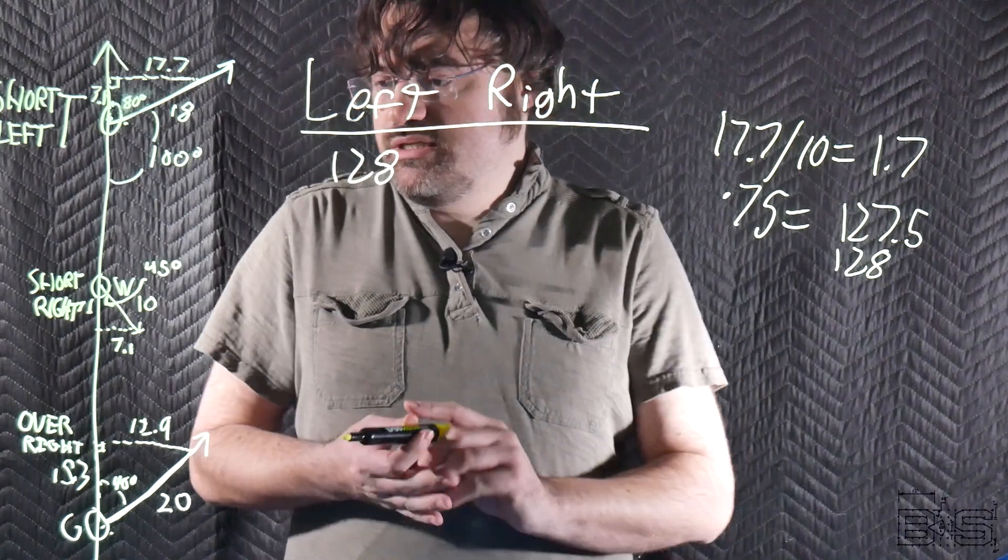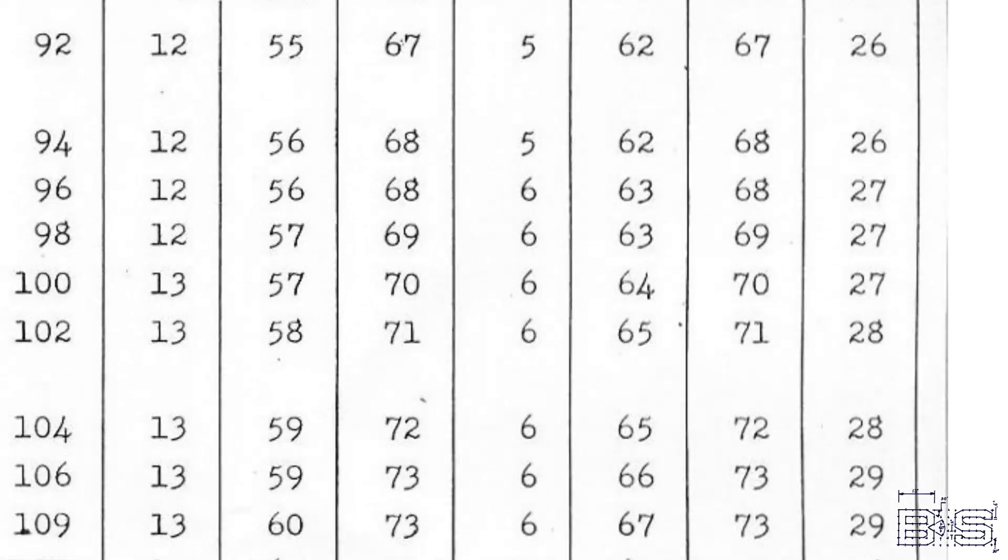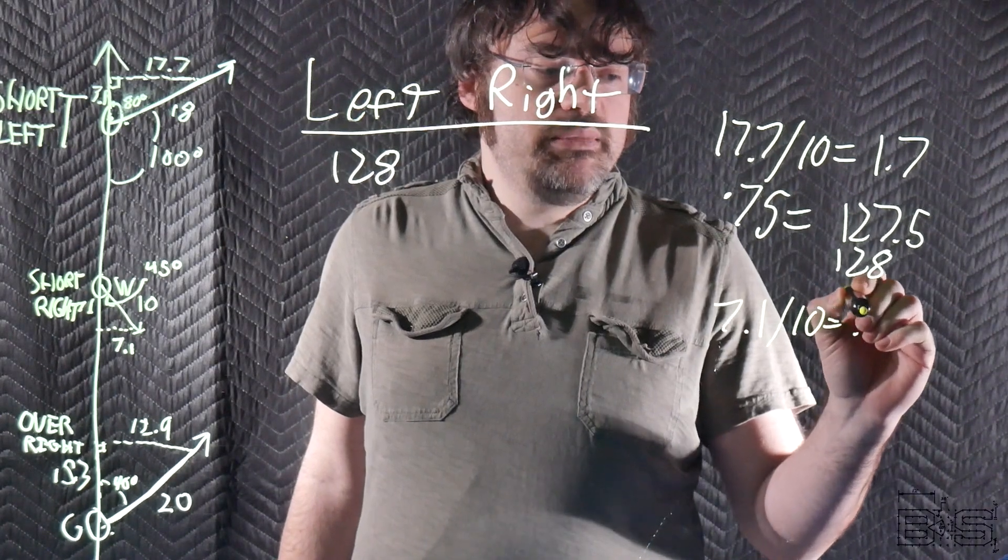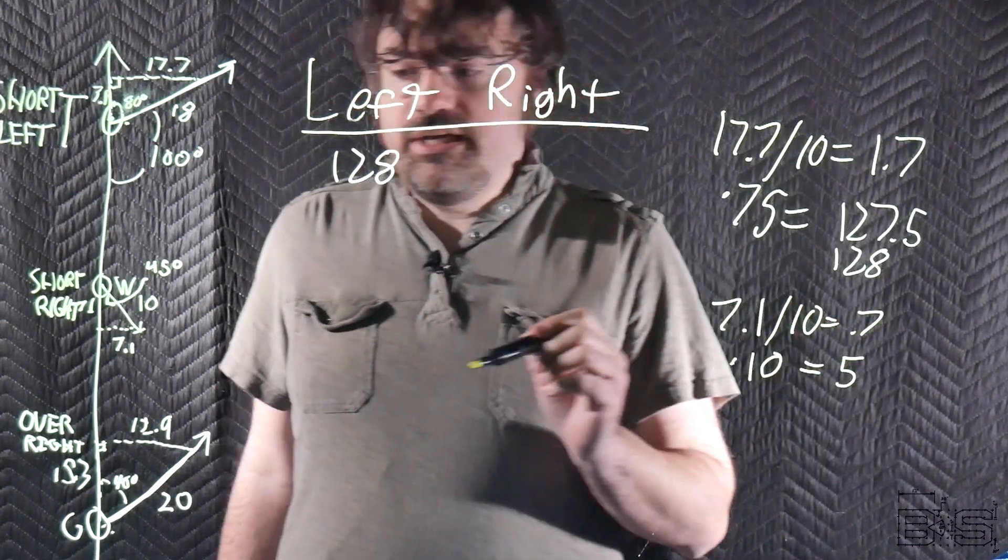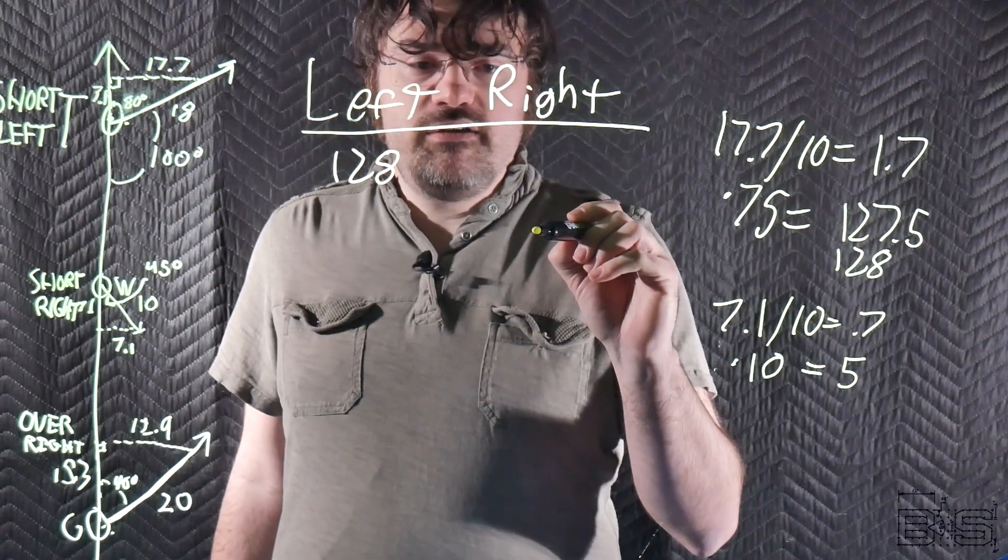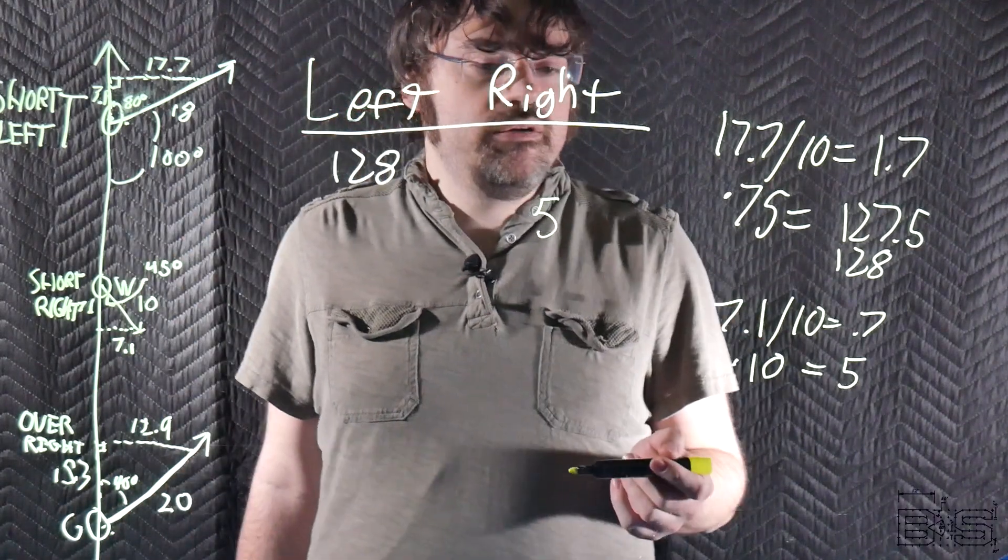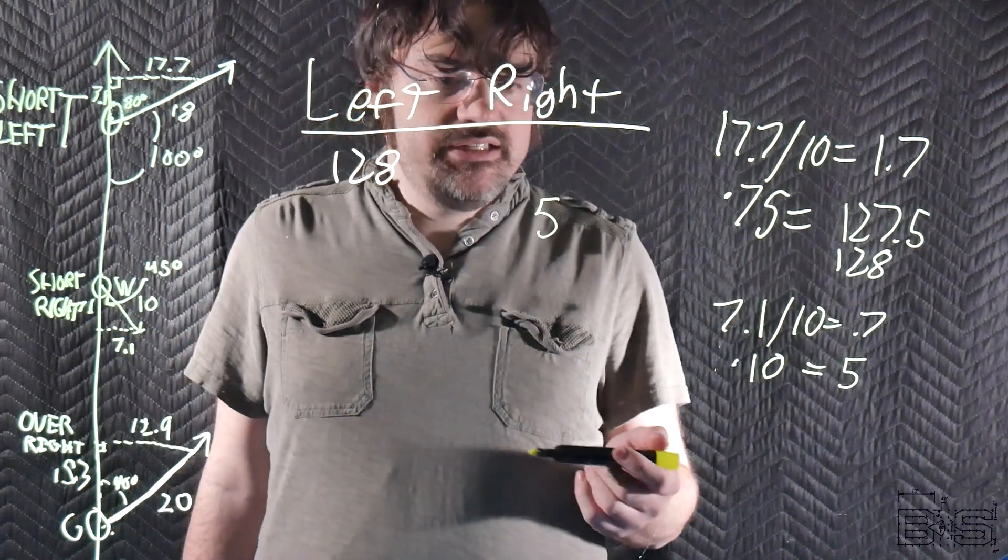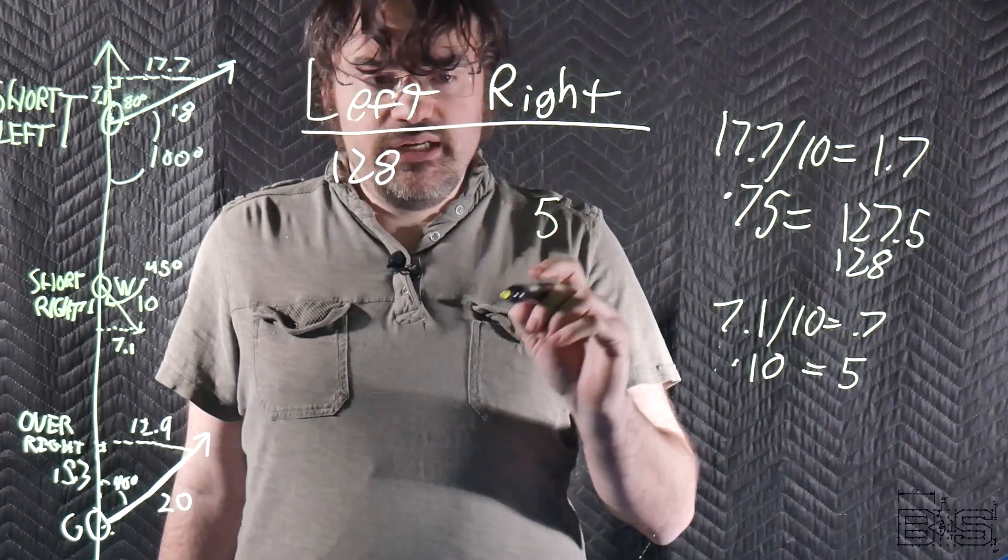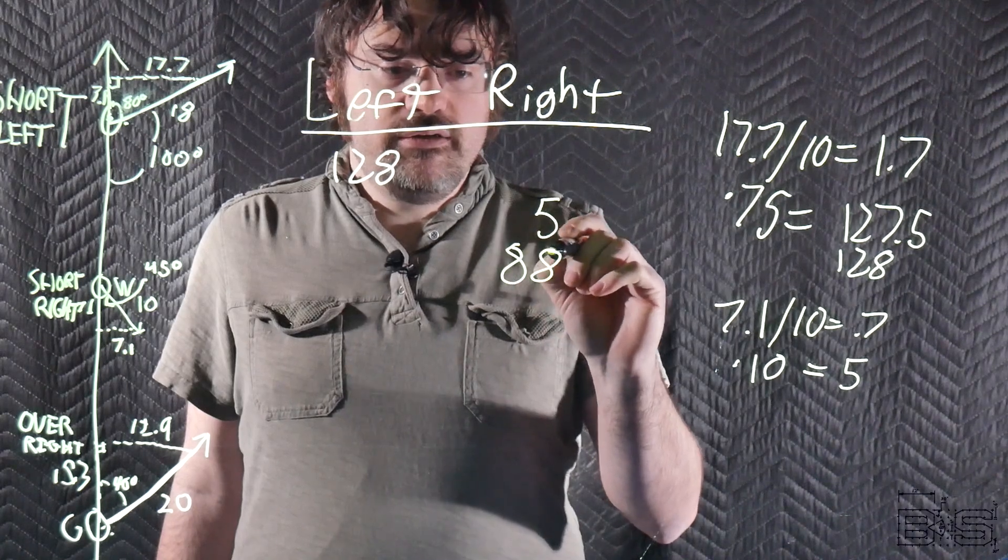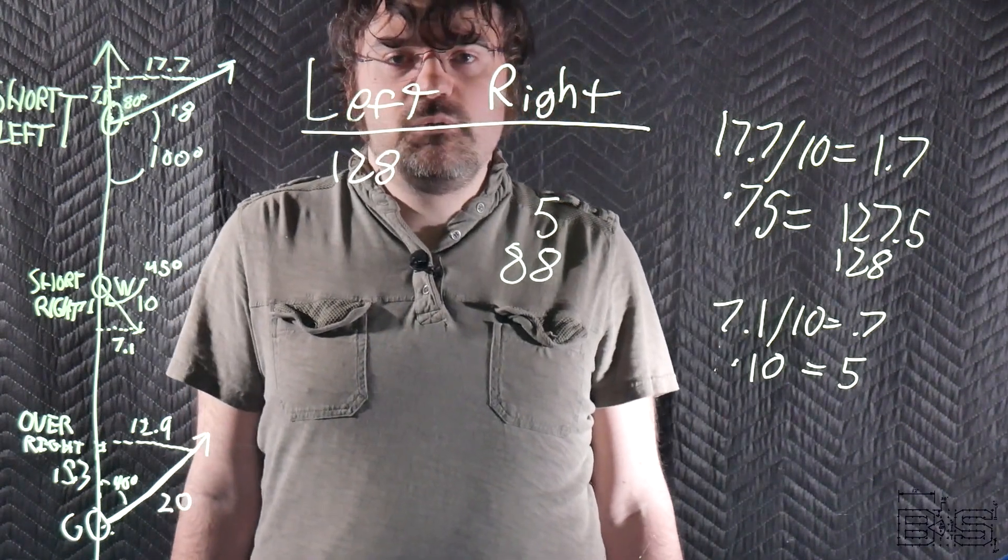Now let's do the wind. 7.1 knots. Range table says per 10 is 7 yards. So that's going to be 0.7 times 10. We'll just say 5. And since that's to the right, it'll be 5 yards to the right. Now for gun, 12.9. Range table says per 10 is 68. So divided by that, it gets us 88. And since this is to the right, that's going to be another right error of 88 yards.